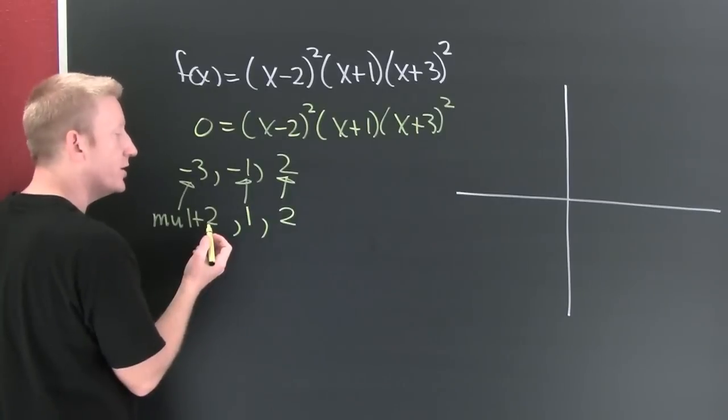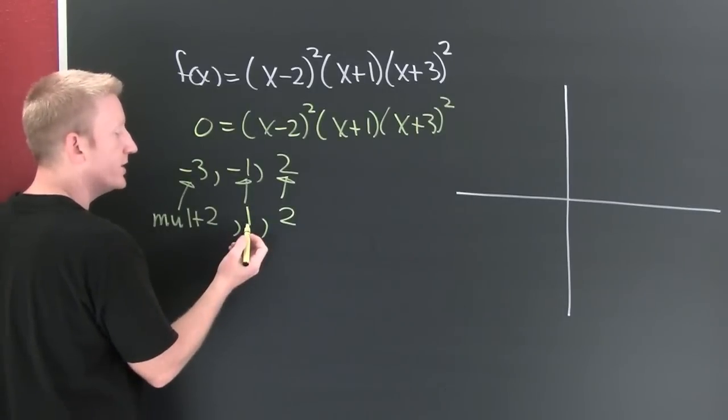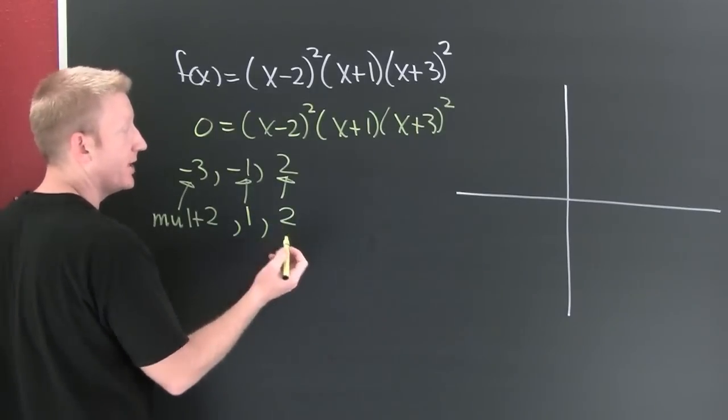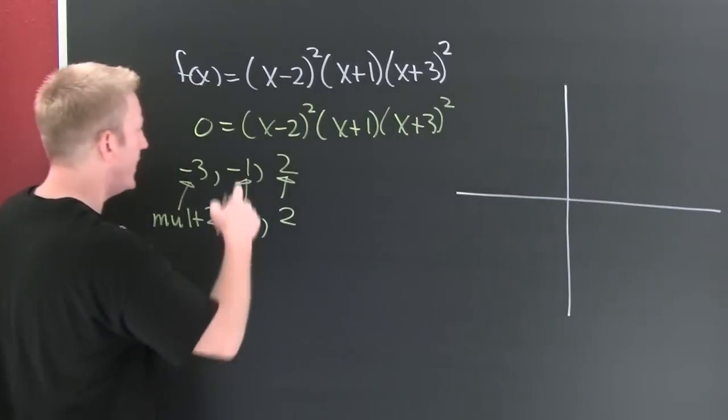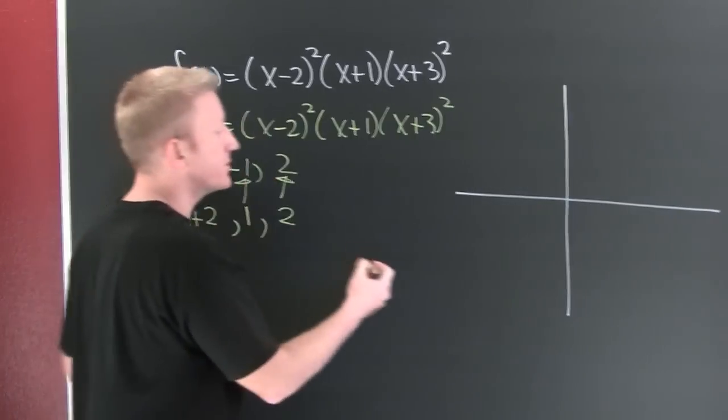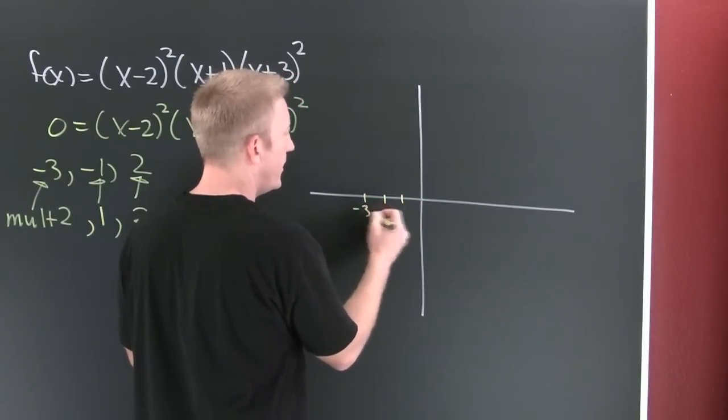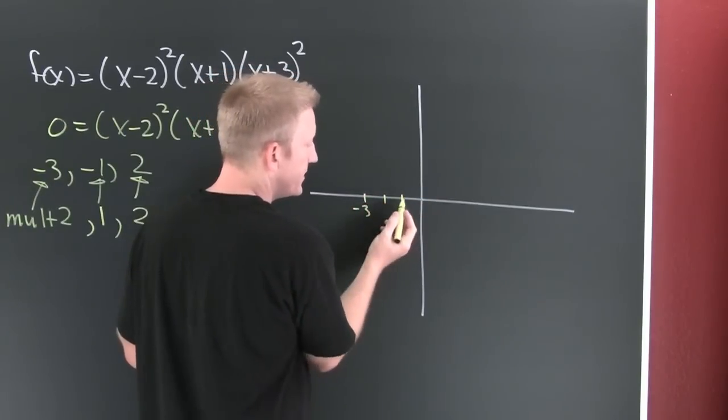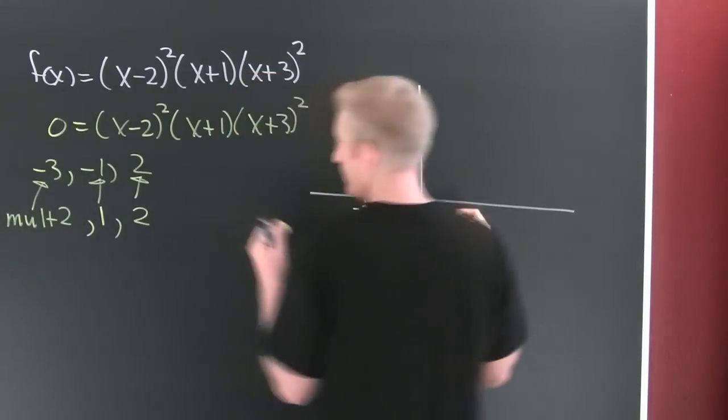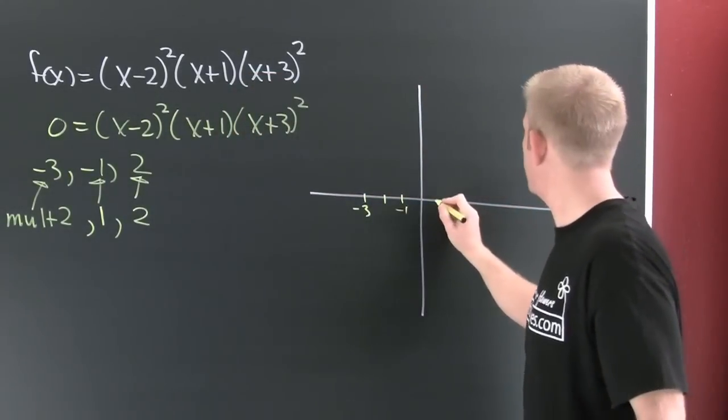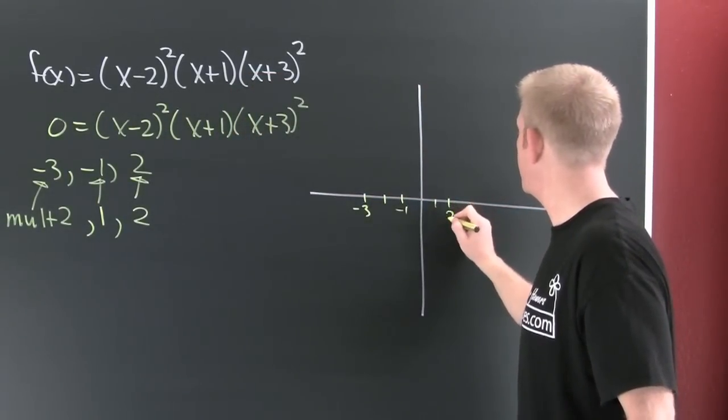That means that they have occurred more than one time, only one time, and two times. -3 is 1, 2, 3 right here. -1 is here, and 2 is right here.